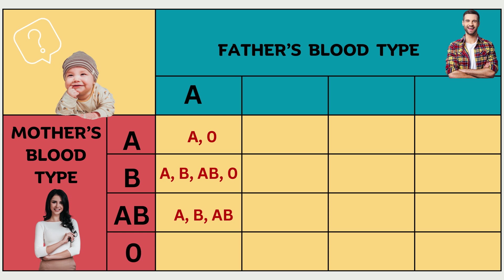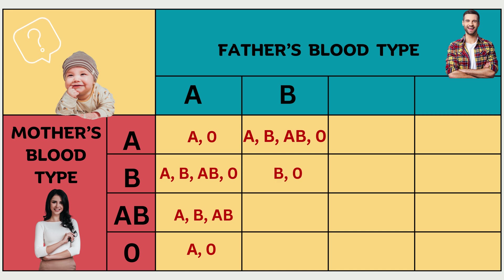If the mother is blood type O and the father is blood type A, the child could be A or O. When both parents have blood type B, the child's blood type options are only B or O. If the father is blood type B and the mother is blood type AB, the child could be blood type A, B, or AB. If the mother has blood type O and the father has blood type B, the child could be B or O.